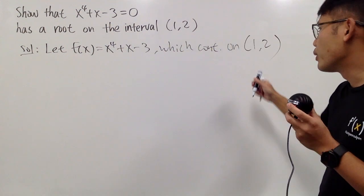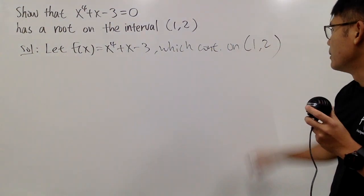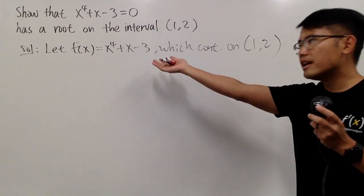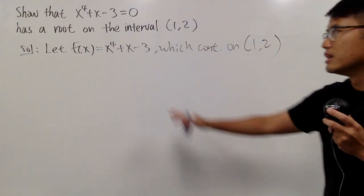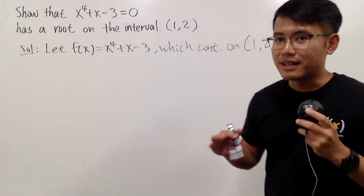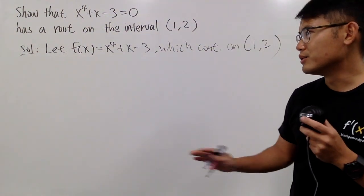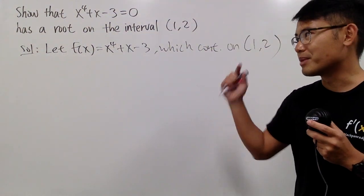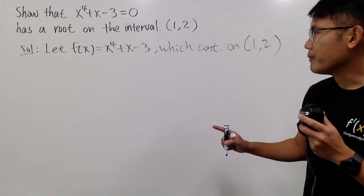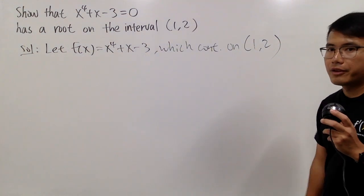And of course for the end point, sometimes people put a square bracket to include end points. In this case, it doesn't really matter because this right here is in fact continuous everywhere. There's no fraction, no square root, right? Just a polynomial. So here we have this continuous function right here.